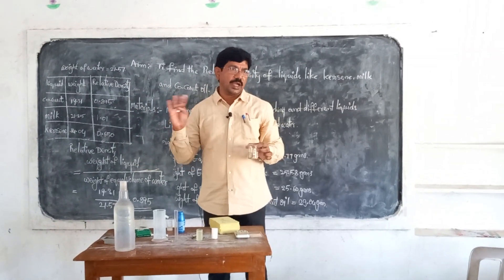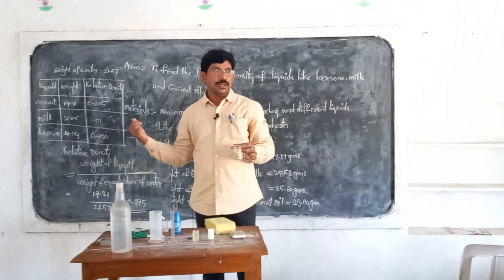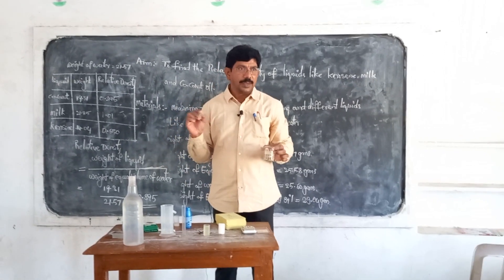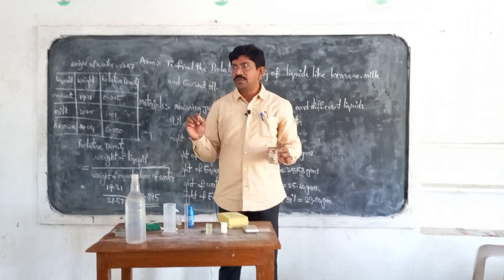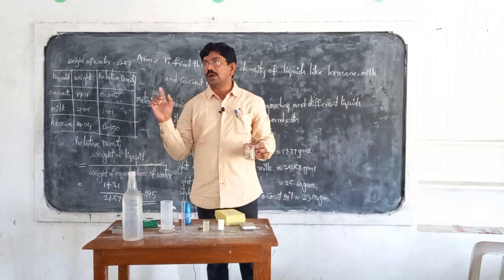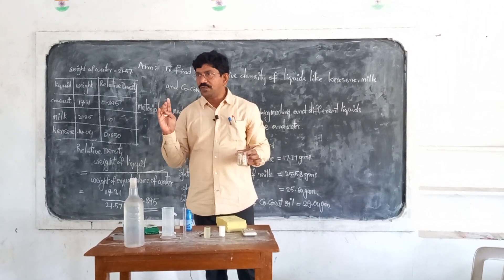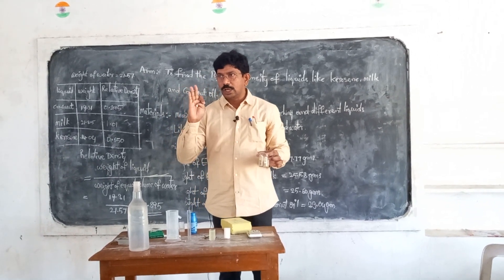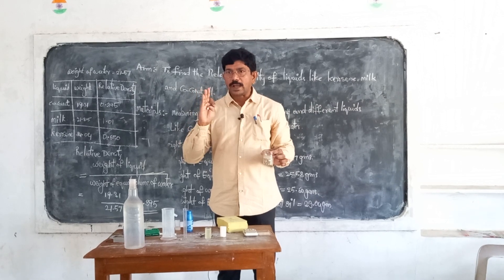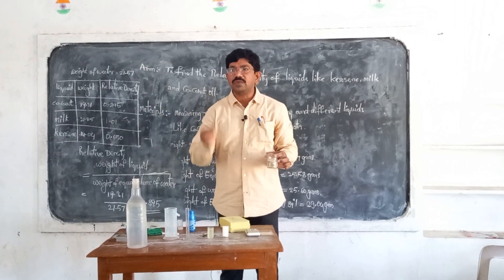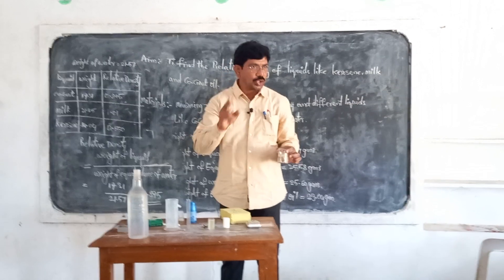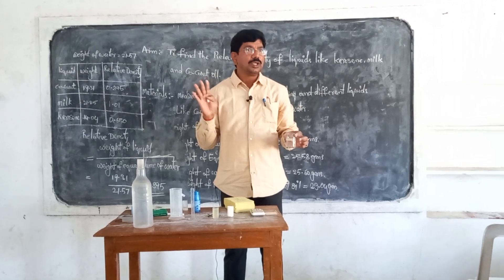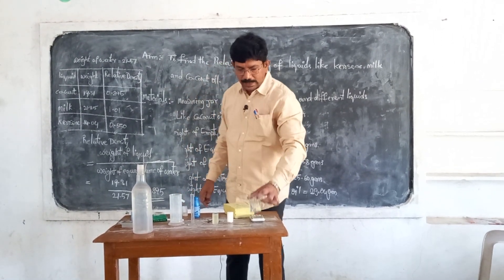We can similarly find the relative density of honey and other different liquids using this simple method. We found the relative densities of coconut oil, milk, and kerosene, comparing them with water. There are no units for relative density — that is the important thing to remember. Thank you.